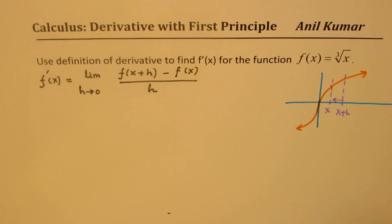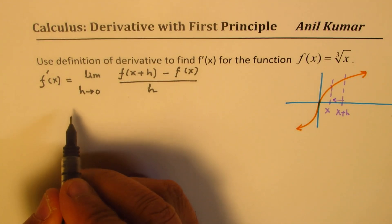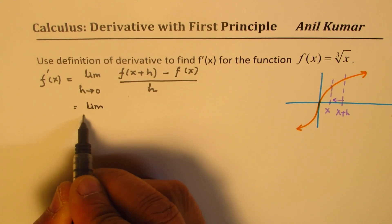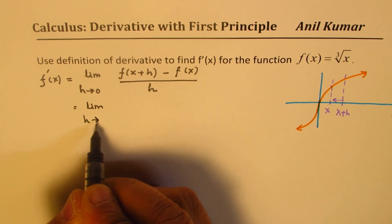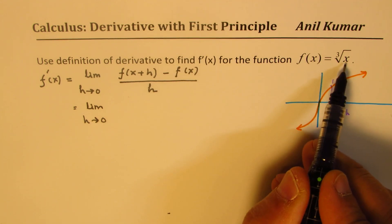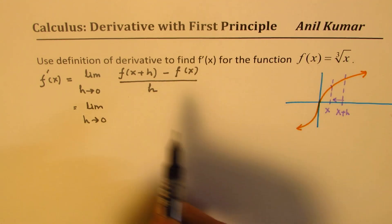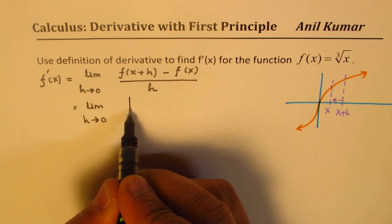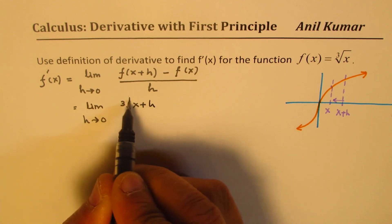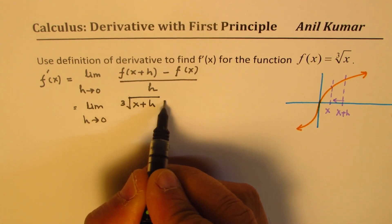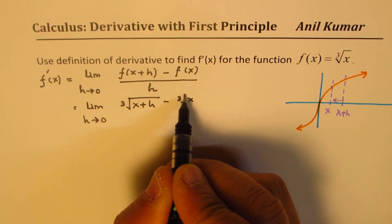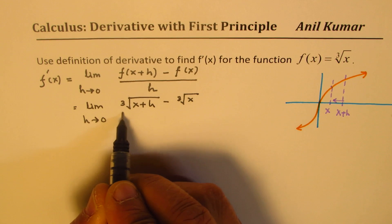This can be written as: limit as h approaches 0 of f(x+h), which means replace x with x+h. So we get the cube root of (x+h) minus the cube root of x, all over h.